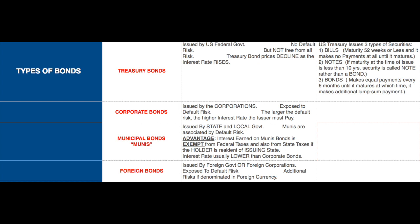Federal agencies and other government-sponsored entities (GSEs) include the Tennessee Valley Authority, the Small Business Administration, Fannie Mae, Freddie Mac, and the Federal Home Loan Bank System. Agency debt and GSE debt are not officially backed by the full faith and credit of the US government, but investors assume the government implicitly guarantees these debts, so these bonds carry interest rates only slightly higher than Treasury bonds.